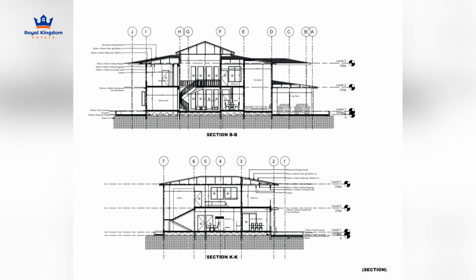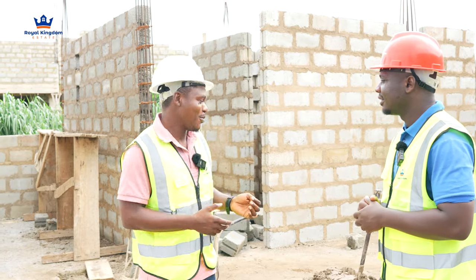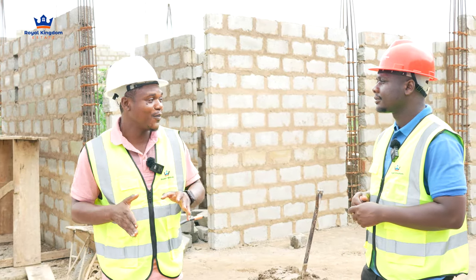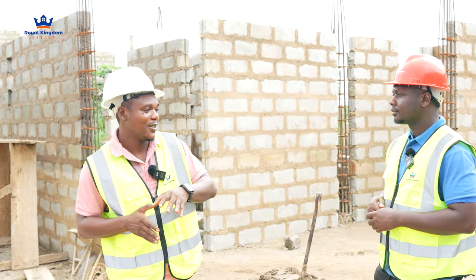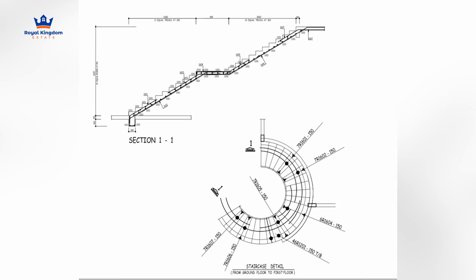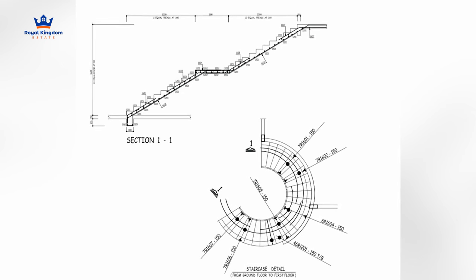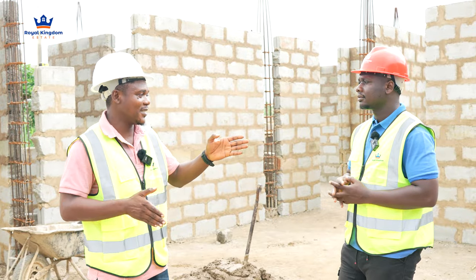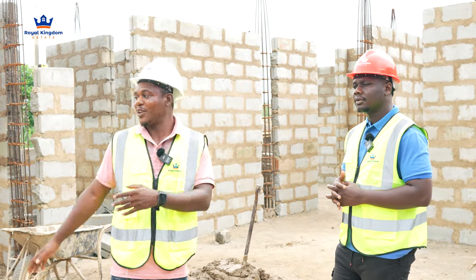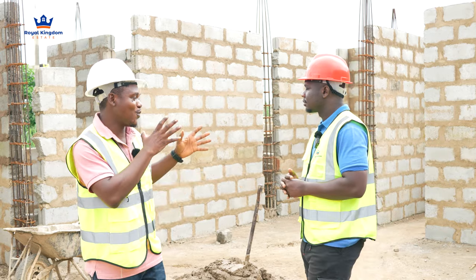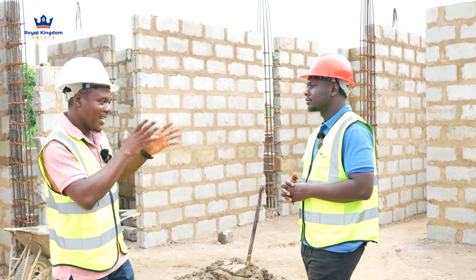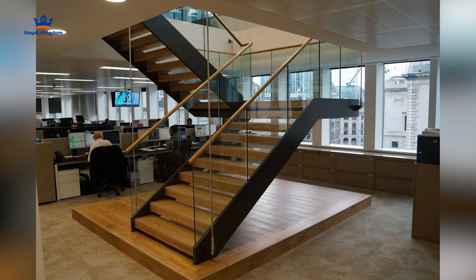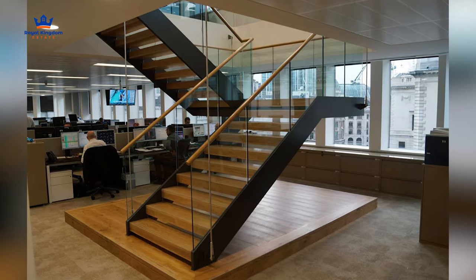We have different types of stairs. The dog leg can be a full turn — a 180-degree turn — a half turn which is a 90-degree turn, or a quarter turn. It depends on the landing and where the staircase leads up to. The dog leg staircase will be made out of wood, not concrete as we usually see, while the spiral staircase will be made out of concrete.